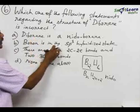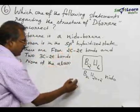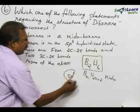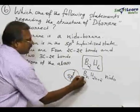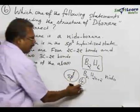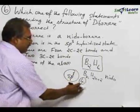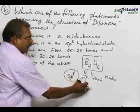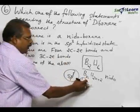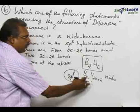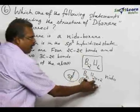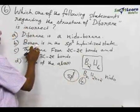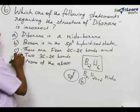Boron is in the sp³ hybrid state. There are four hybrid orbitals; out of four hybrid orbitals, three are used for bond formation, and the fourth one is an empty hybrid orbital that is used for a special bond called banana bond formation. Therefore, statement B is also correct.